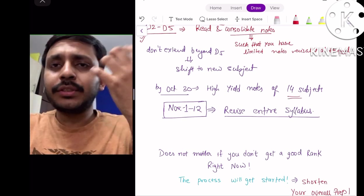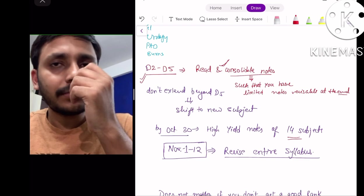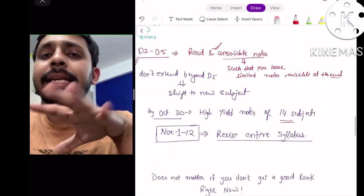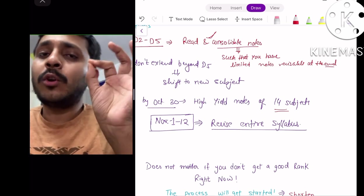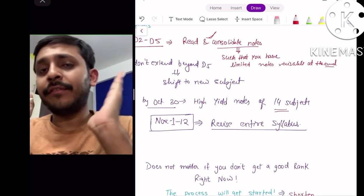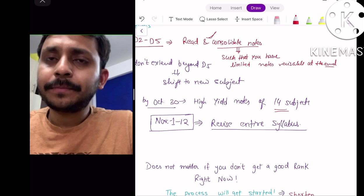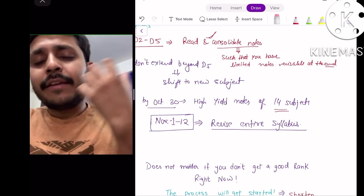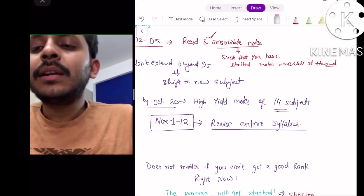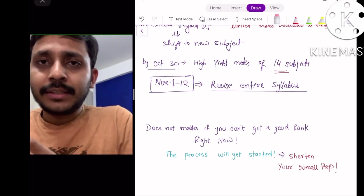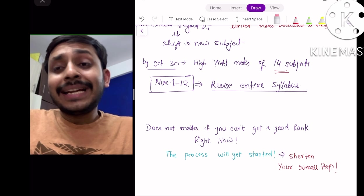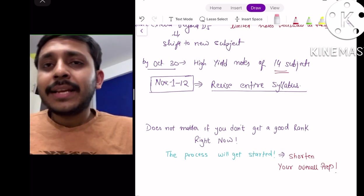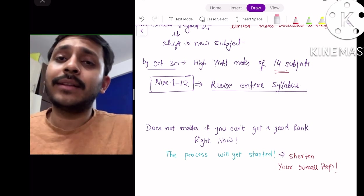If you follow the strategy, by October 30 you'll be able to make high yield notes of around 14 subjects, because minor subjects like forensic, ortho and derma will take around three days not five days. From 1st November to 12th November, just revise whatever you have read till 31st October. It does not matter if you are able to read each and every subject, and it does not matter if you get a good rank also at this point of time, because what will happen is it will get the process started. Breaking that initial inertia I think is very important when you're studying for a PG entrance exam.